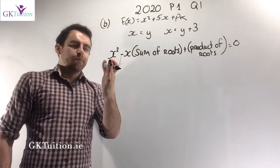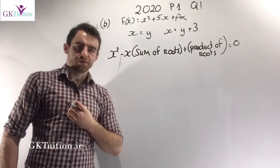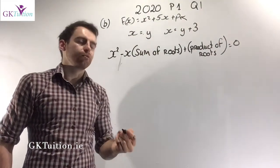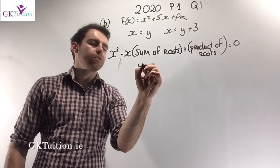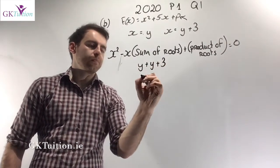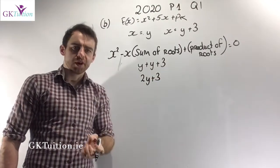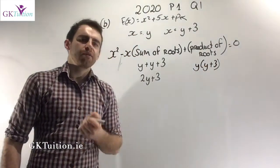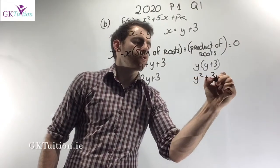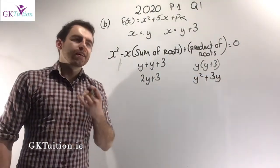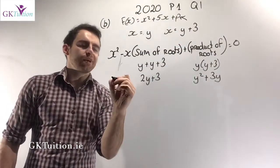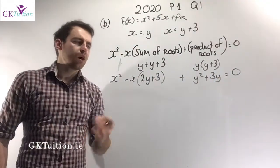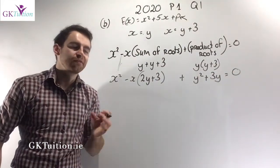If every quadratic can be written as x squared minus x times the sum plus the product of the roots, and the roots are y and y plus 3, then the sum of the roots is y plus y plus 3, which equals 2y plus 3. The product of the roots is y times y plus 3, which gives y squared plus 3y. So this quadratic, with roots y and y plus 3, can be written as x squared minus x times the sum plus the product of the roots.